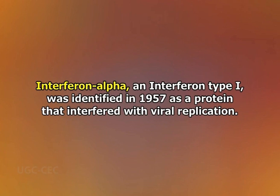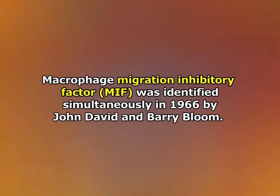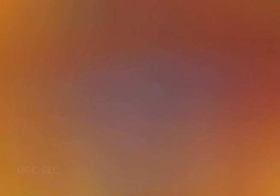Looking at the history: interferon alpha and interferon type one was identified in 1957 as a protein that interfered with viral replication. The activity of interferon gamma, the sole member of the interferon type two class, was described in 1965 — this was the first identified lymphocyte-derived mediator. Macrophage migration inhibitory factor, abbreviated as MIF, was identified simultaneously in 1966 by John David and Barry Bloom. In 1969, Dudley de Mont proposed the term 'lymphokine' to describe proteins secreted from lymphocytes.